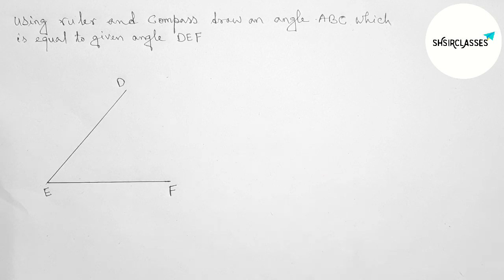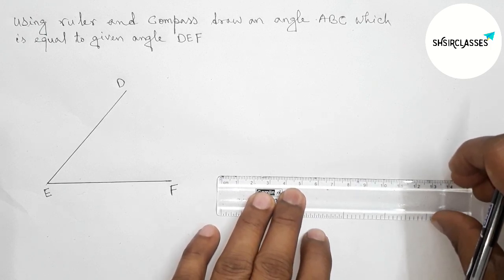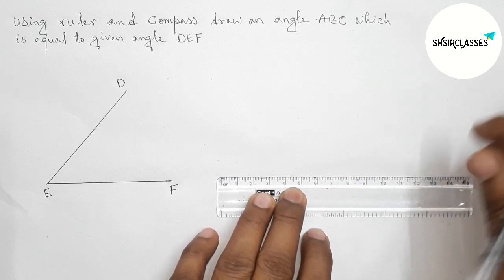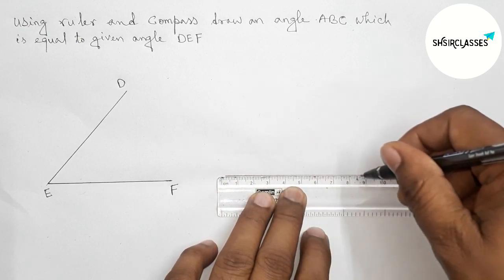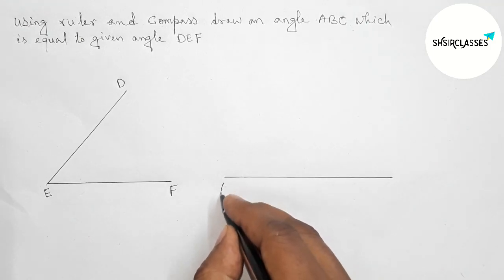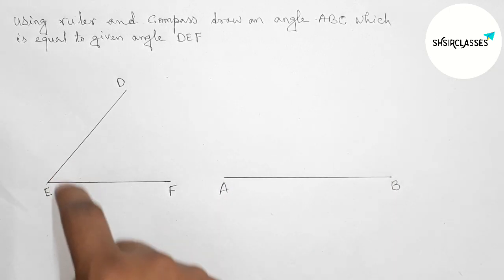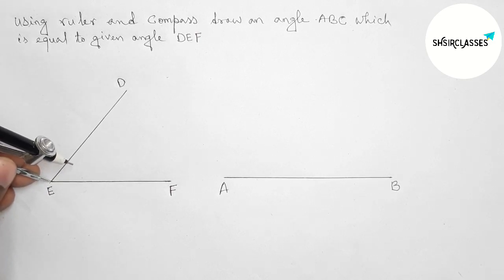Now we have to draw same angle ABC. So first, drawing here a line segment of any length by this way. Okay, next taking point here A and B. Now with the help of compass, putting the compass